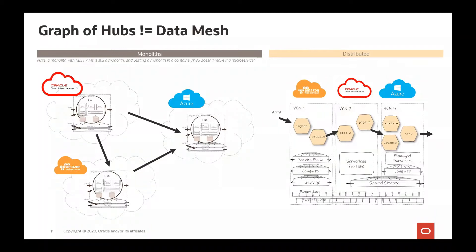Most importantly, it's crucial to recognize that we cannot simply take old-style data hubs, put them in the cloud, and call it a data mesh — it doesn't work like that. The whole purpose of a data mesh is to decentralize the processing model while still providing a world-class self-service experience for data product owners. Without decentralization and decomposition of the data hubs, we can never truly achieve the DevOps benefits that agile organizations need to support rapid iterations and the continuous integration and delivery of data products.